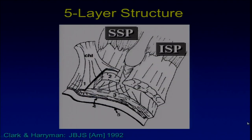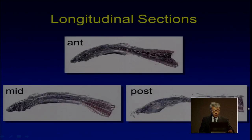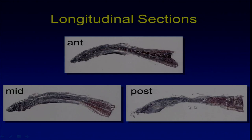What is a PASTA lesion? First, let's look at the anatomy of the rotator cuff tendon. It is composed of five layers. Layer one is the extension of the coracohumeral ligament. Layer two is the tendon proper — thick collagen fibers running parallel. Layer three is oblique collagen fibers. Layer four is another reflection of the coracohumeral ligament. Layer five is the capsule. As you can see, layer two is the thickest and main part of the tendon.